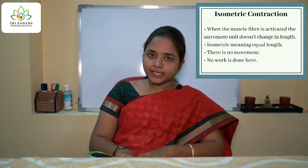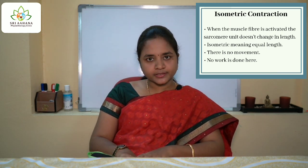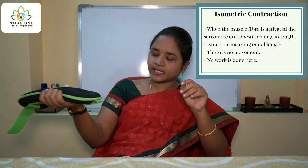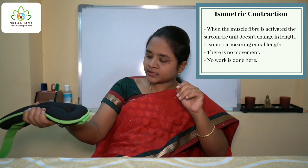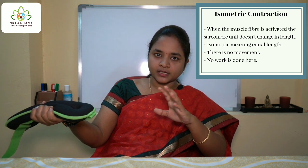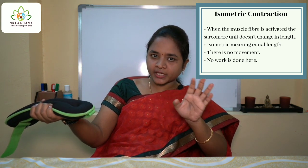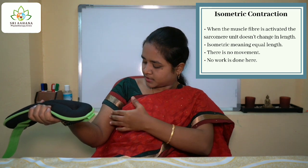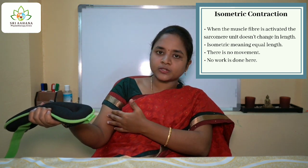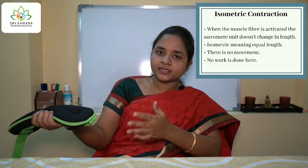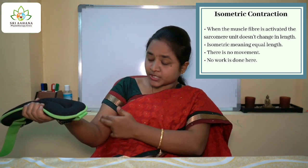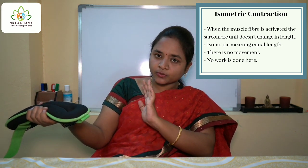Now with an example I will show you what an isometric contraction will be. With the help of this sandbag I will demonstrate — I am holding this sandbag in a constant position, I am not moving my hand anywhere. What happens is there is a tension that develops in my biceps because of the isometric contraction that is happening. The biceps is not changing in its length because I am just holding the object; there is no movement at all.